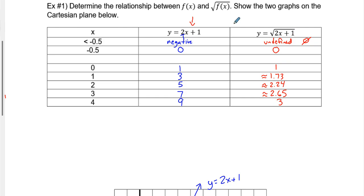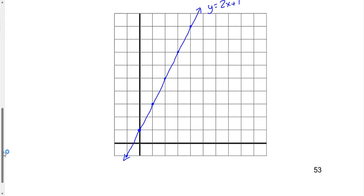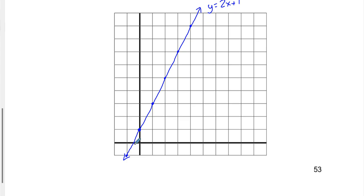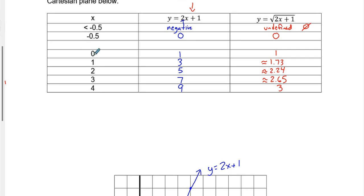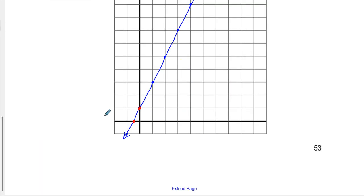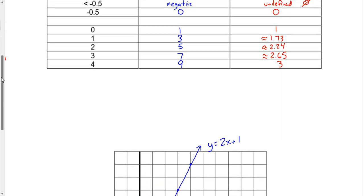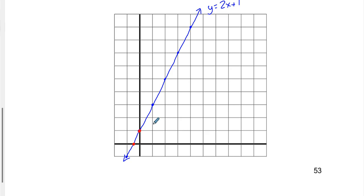Now to find the square root graph, there are some really nice numbers to work with. When x is negative 0.5, the y value is 0 on both graphs. When x is 0, y is 1. When x is 1, the original graph is at 3, but the square root of 3 is 1.73, so we approximate that point at (1, 1.73). For x equals 2, the y-value is 2.24, and for x equals 3, y is 2.65.